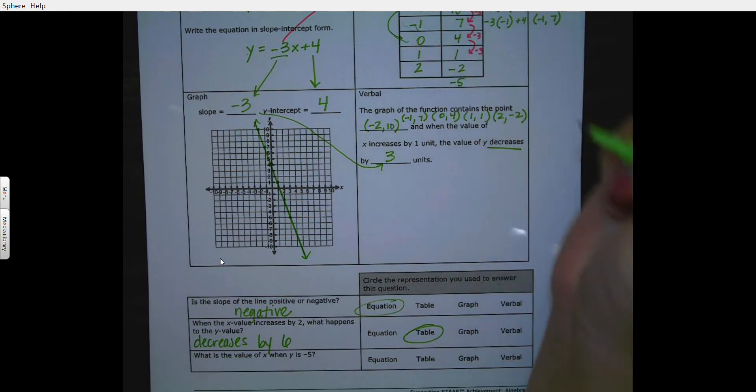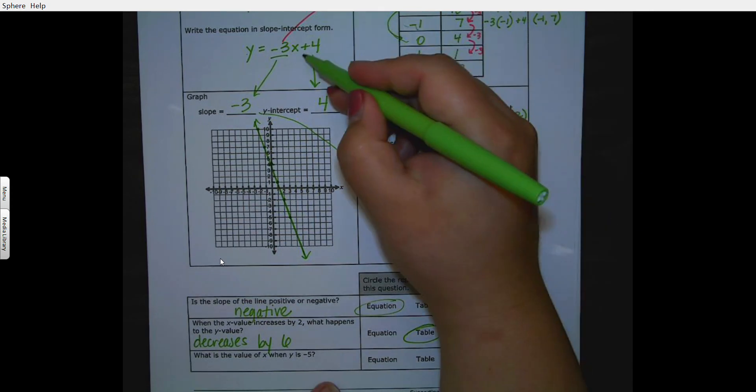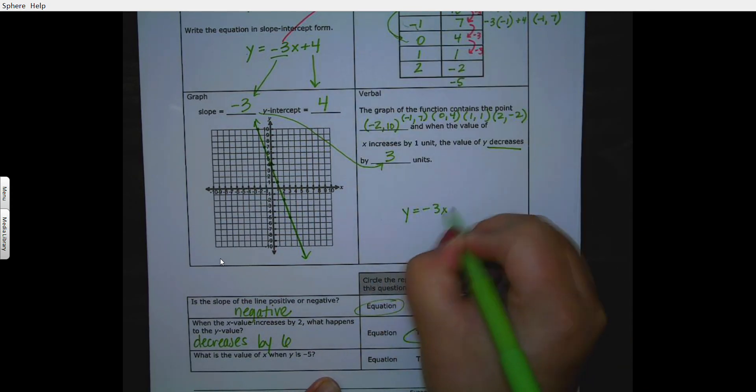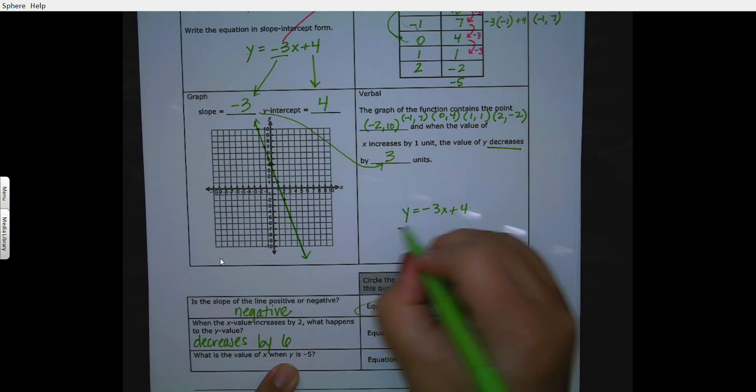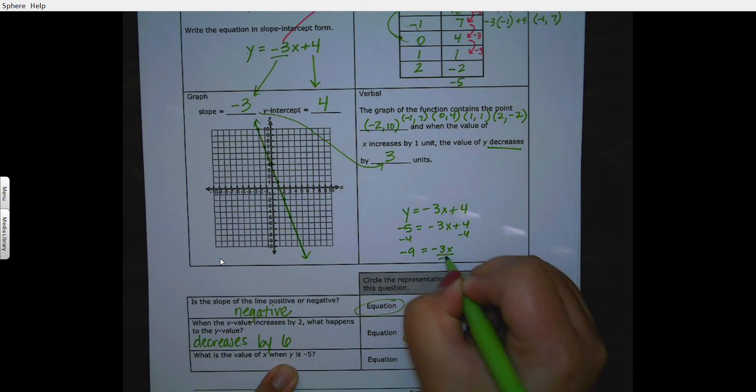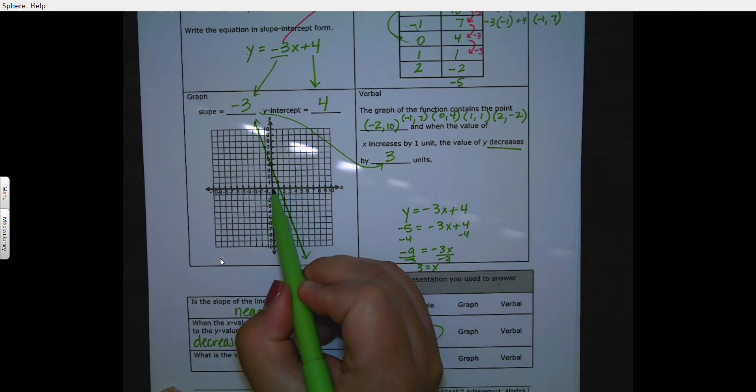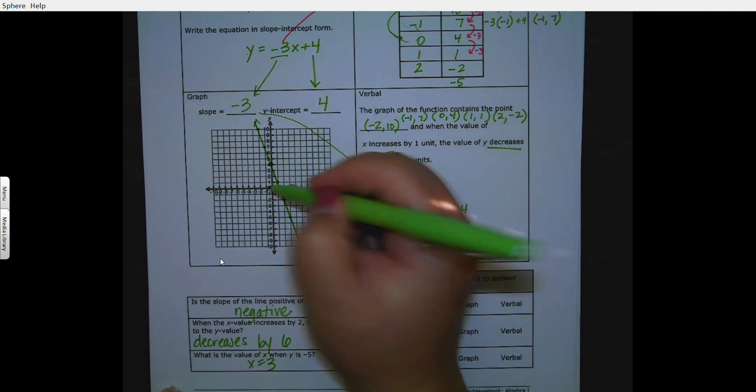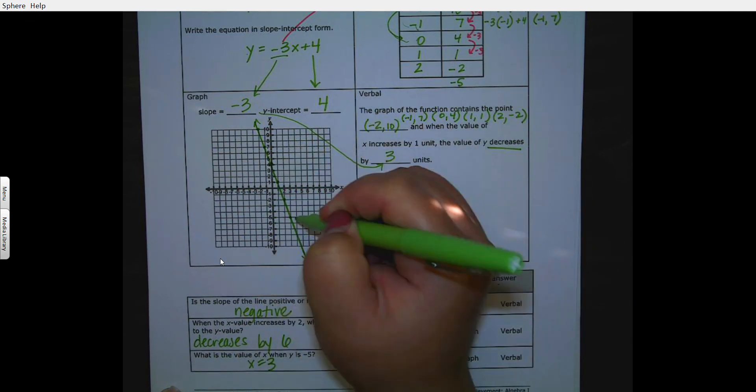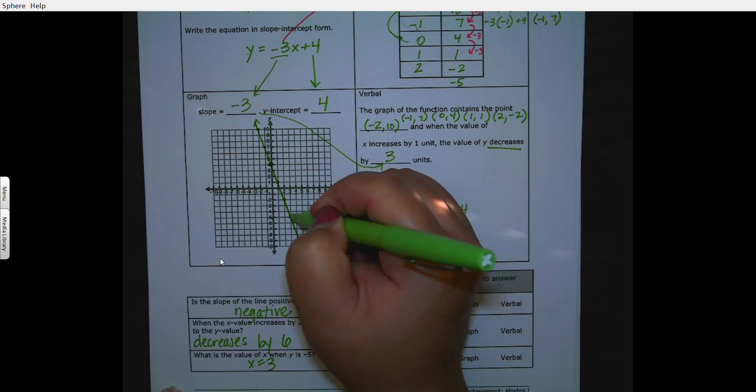Here and go backwards, and that's pretty hard, so I'm actually going to use my equation y equals negative 3x plus 4. When my x is negative 5, subtract 4 and I get negative 9 is equal to negative 3x, divided by negative 3, and 3 and 3 is equal to x. So when my y is negative, when my y is negative 5, oh I did that wrong, my x is 3. It's this point right there.